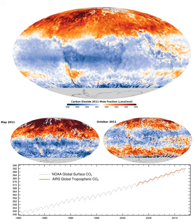In plants, algae and cyanobacteria, photosynthesis releases oxygen — this is called oxygenic photosynthesis. Although there are some differences between oxygenic photosynthesis in plants, algae, and cyanobacteria, the overall process is quite similar in these organisms. However, there are some types of bacteria that carry out anoxygenic photosynthesis, which consumes CO2 but does not release oxygen.